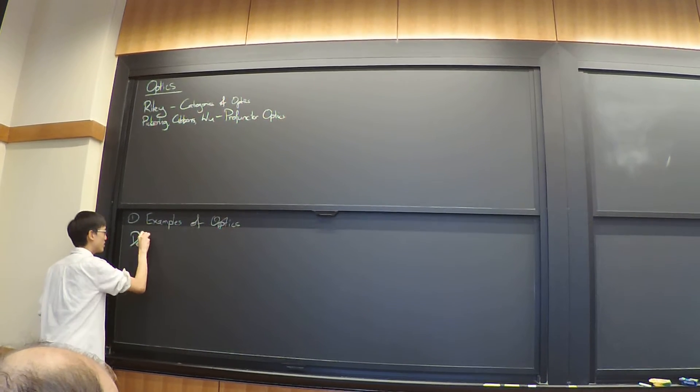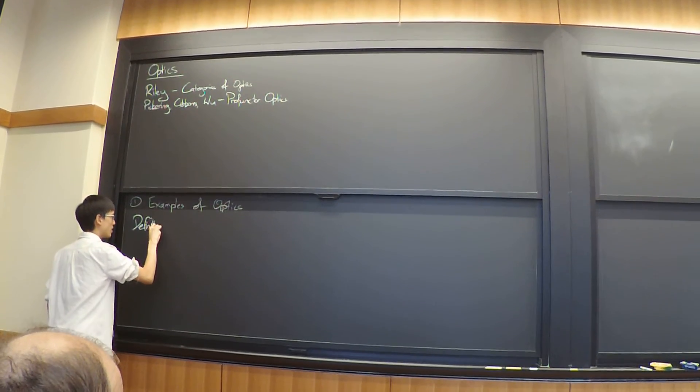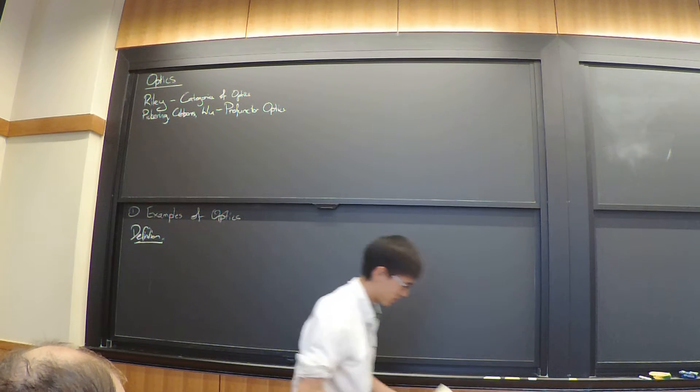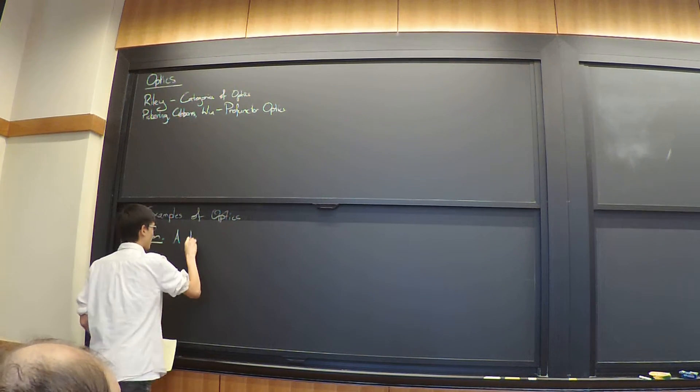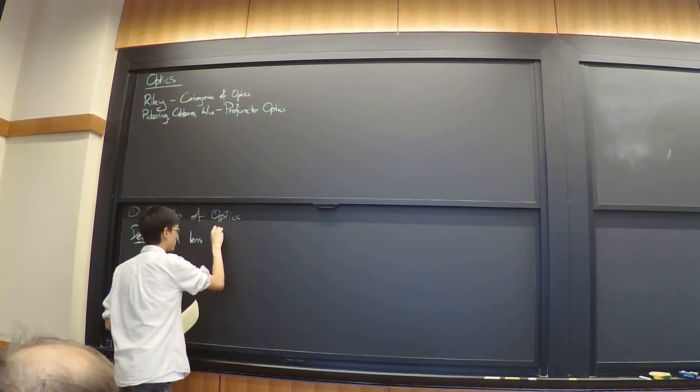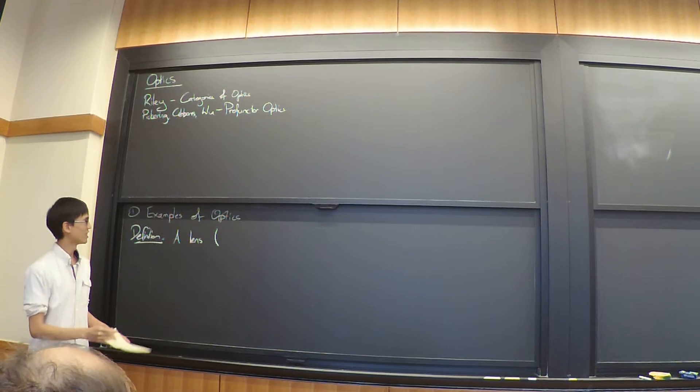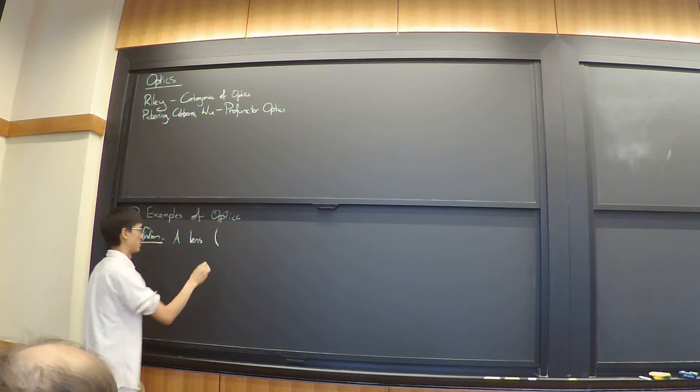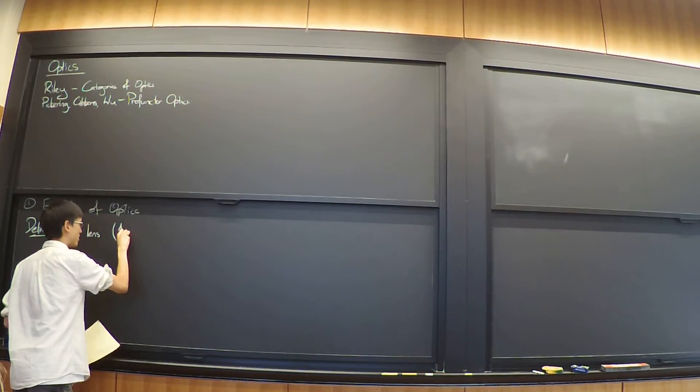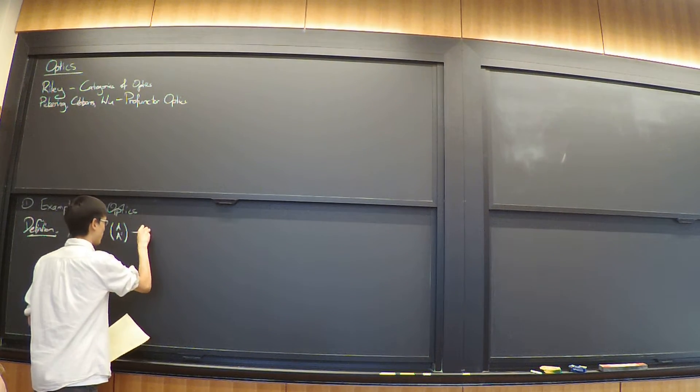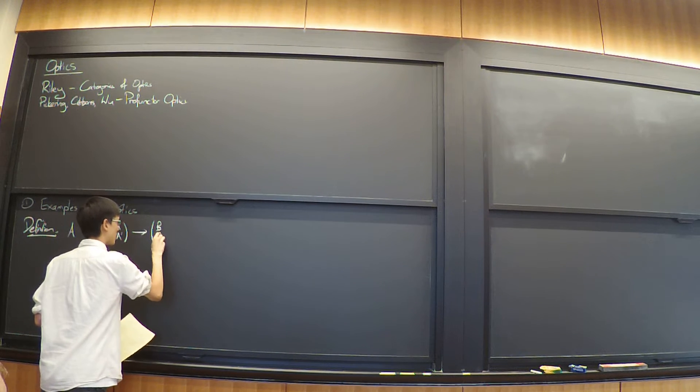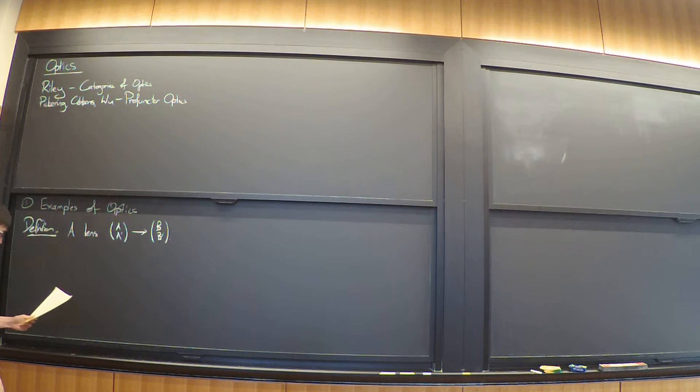So the first example is going to be that of a lens. A lens, let's say, I won't be too precise, but let's just say we're working at the moment in some symmetric monoidal category, or some category with products. You can pretend everything's in set at the moment. So a lens from A A prime to B B prime, so these are objects in our category, set, is a pair.